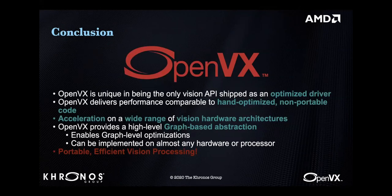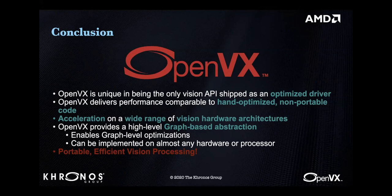Some conclusions: as a developer, whenever you're building an application, keep in mind what kinds of APIs are going into it. Is my application going to be portable? Can I use multiple platforms? These things come to you just by using the OpenVX API. In terms of acceleration, even on a simple application there is great benefit in using the OpenVX API — it is portable and efficient. I would advise if you have time, go ahead, download the GitHub projects and try it out.